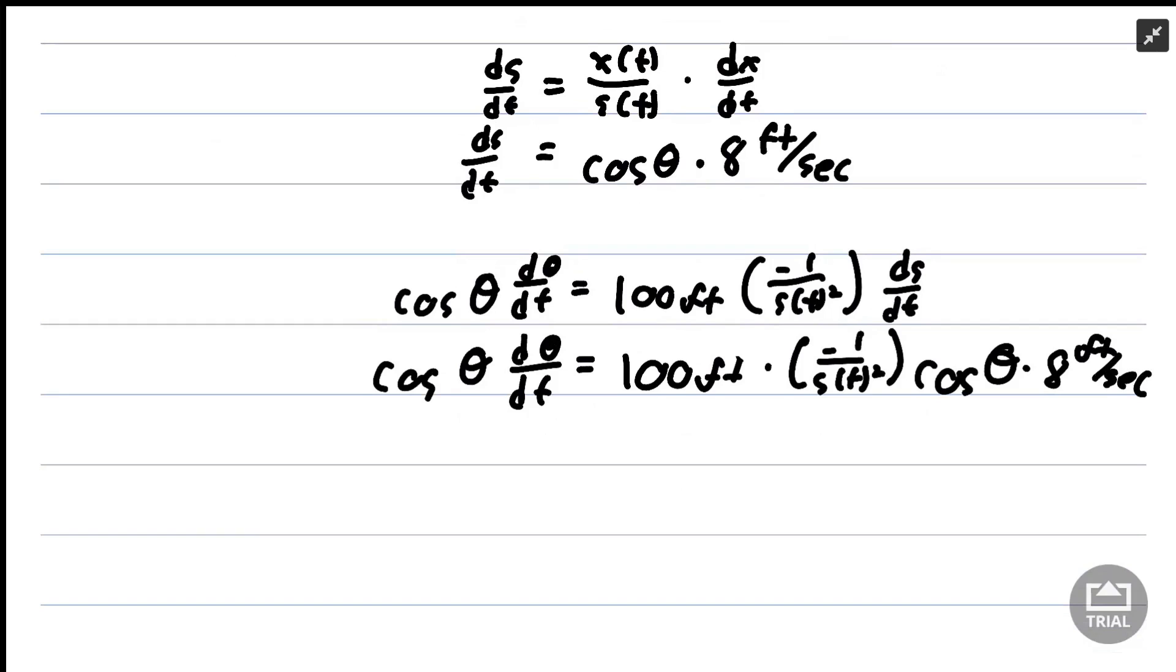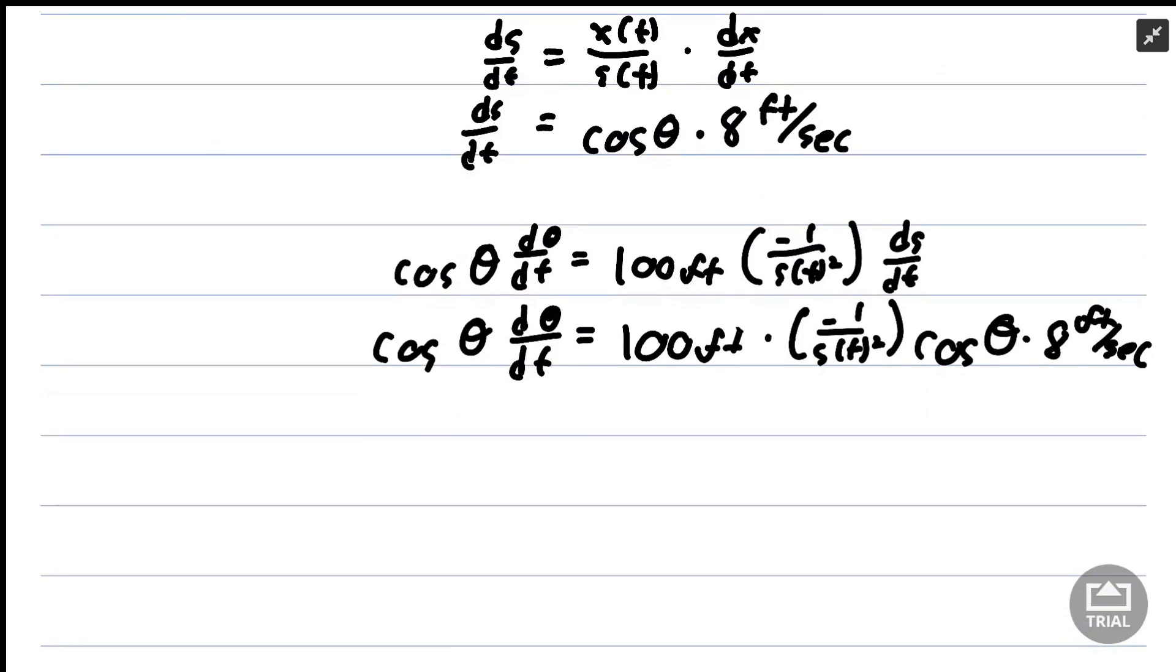Now we've got a lot of pieces here, but this actually simplifies quite nicely. We have a cosine on both sides of the equation. We know s(t) is 150 feet at the point we care about, so we're going to simplify.